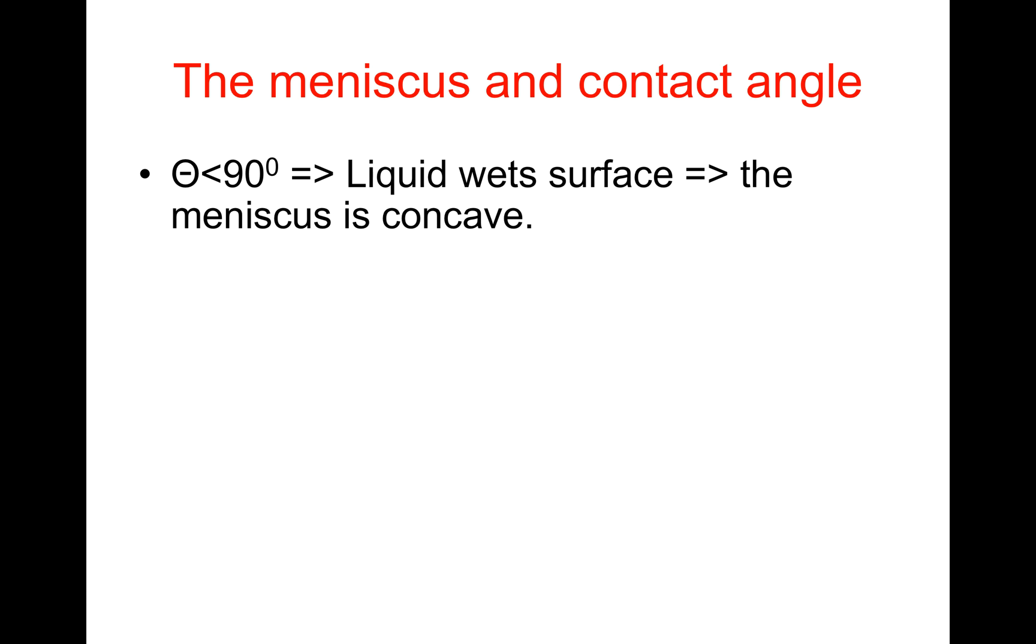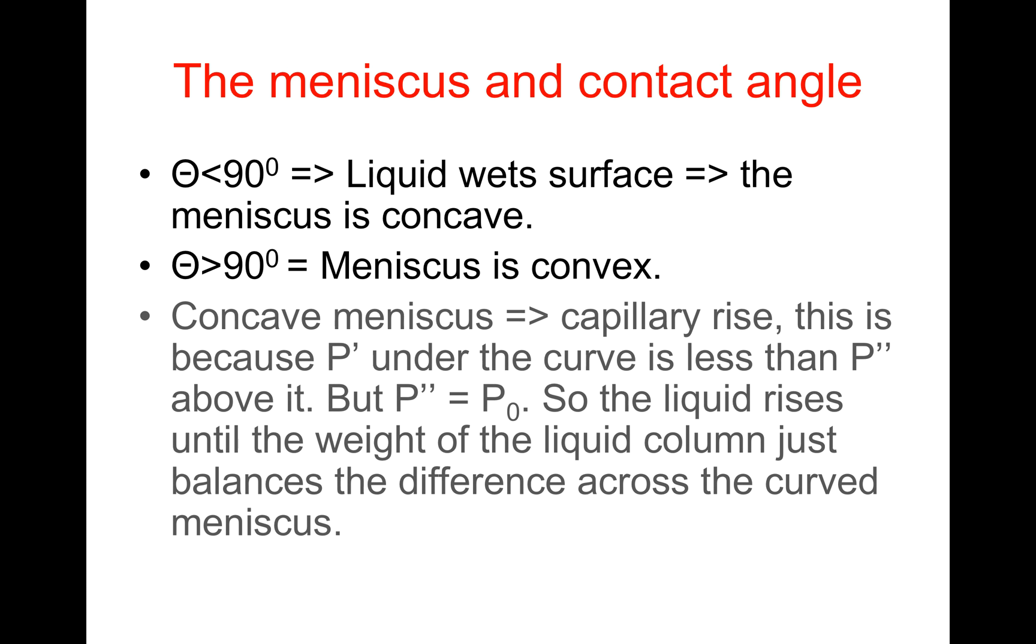Now, if θ is less than 90°, then liquid wets the surface. Consequently, the meniscus is concave. However, if θ is greater than 90°, the meniscus is convex. Concave meniscus implies capillary rise. This is because P' under the curve is less than P' above it. But P' equals P₀. So the liquid rises until the weight of the liquid column just balances the difference across the curved meniscus.